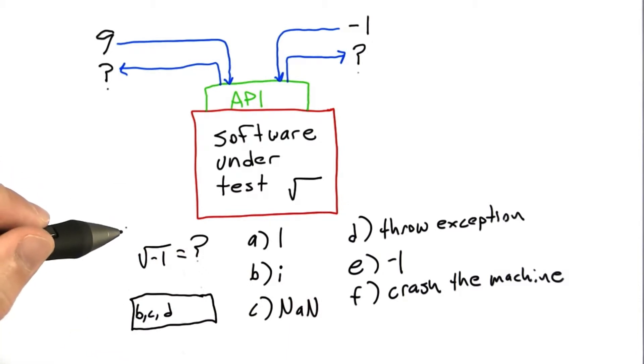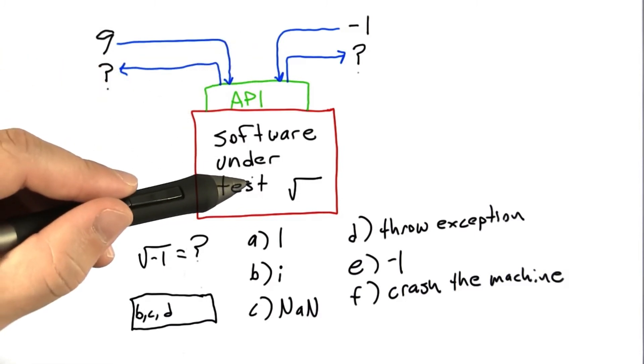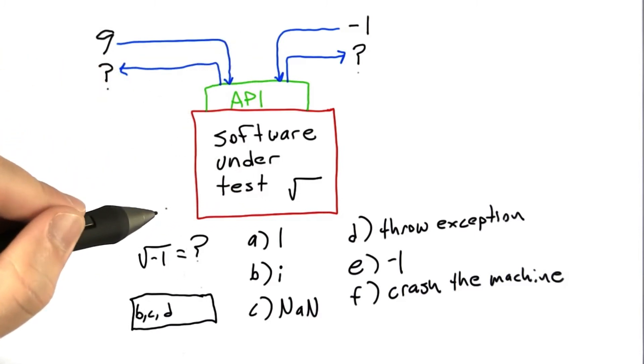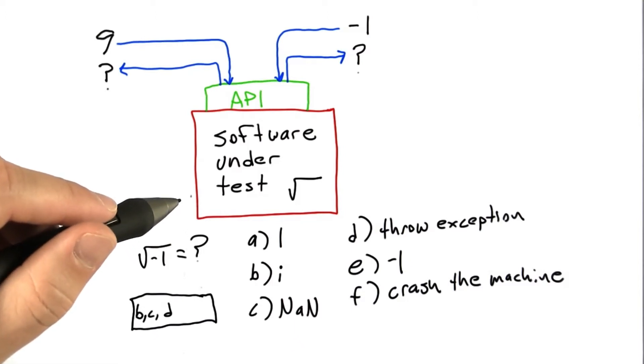And so again here what's happening is just running a simple test case is forcing us to think about the specification for the software under test. And in fact, this is really, really common that as soon as we start testing a piece of software, we start to really have to think about what the software is actually supposed to be doing. And this is a good thing.